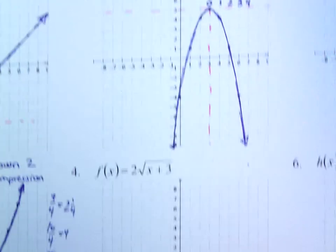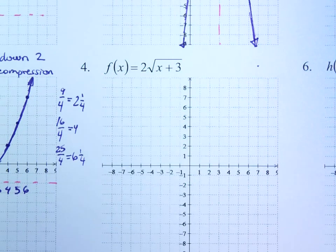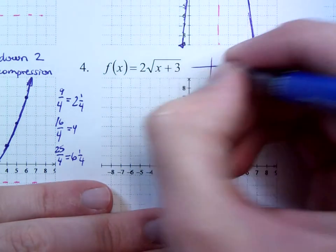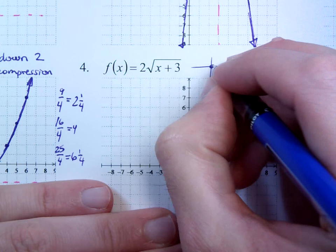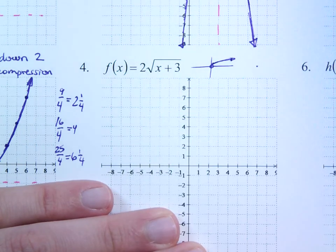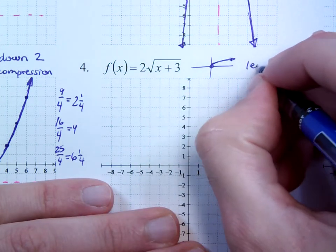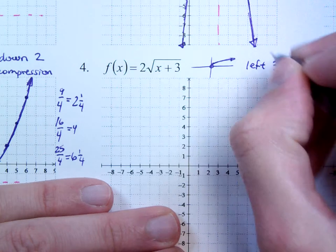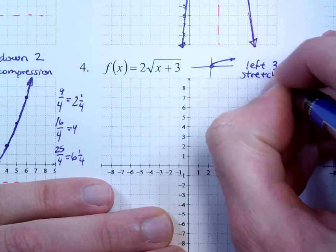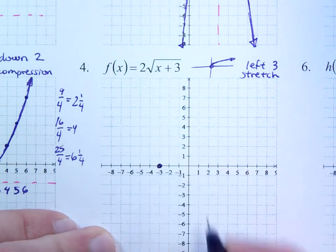Alright, let's see about number 4. Number 4's got a square root. Now, the square root guy looks like this. He's at the origin, but then he kind of goes out like this, like a half sideways parabola. Now, notice on the inside here, he's been shifted to the left 3. And he's got the 2 here, so that's going to be a stretch. It's going to be a vertical stretch for us. So we go to the left 3, and there's my base point.